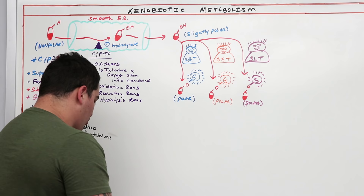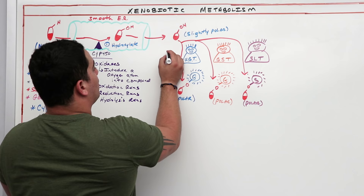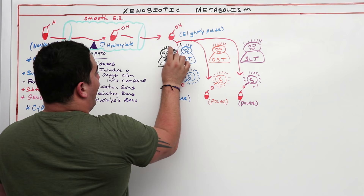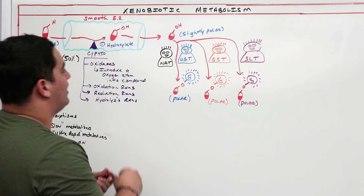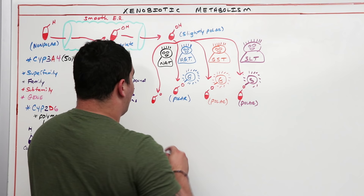Another important enzyme is N-acetyltransferase (NAT), which adds an acetyl group onto the drug molecule, again trying to make the molecule more polar.